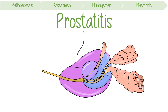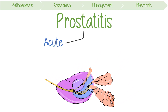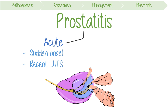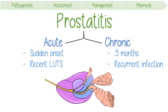Prostatitis is a painful inflammation of the prostate, usually accompanied by a recent bacterial infection. It can be acute, meaning it has a sudden onset and is associated with recent lower urinary tract symptoms like dysuria or painful urination. In contrast, chronic prostatitis is characterised by irritation lasting more than 3 months and recurrent urinary tract infections.